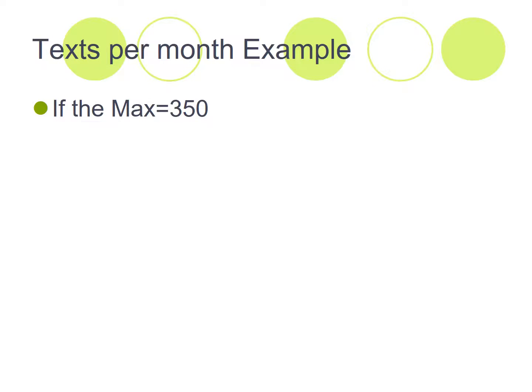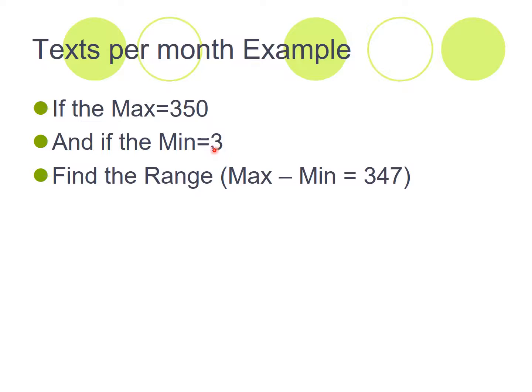Okay, so for example, if we were looking at the number of texts that somebody sent per month, if the maximum number was 350, and the minimum was three, so the range then is going to be your 350 minus your three, which gives us 347. So our range now is 347.